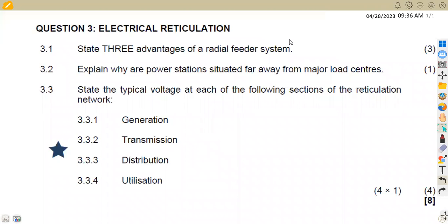Hello guys, welcome back to African Motives. We're still working on electrical trade theory, and on this platform we're going to be focusing on electrical reticulation. This is the question we're going to be focusing on from the past paper of November 2022 that I just picked so we can have our revisions. The first part, 3.1, asks to state three advantages of a radial feeder system.